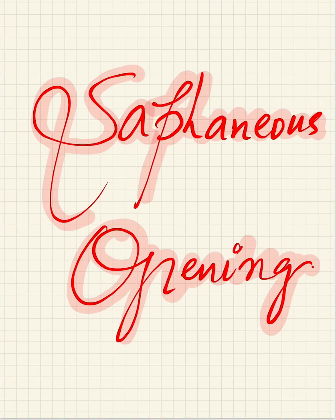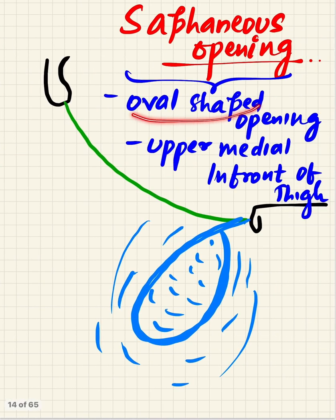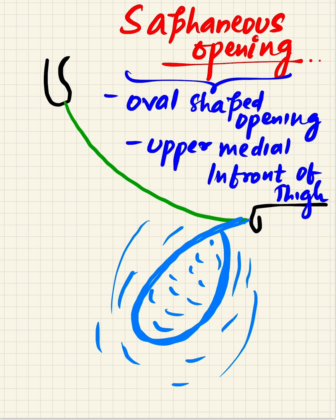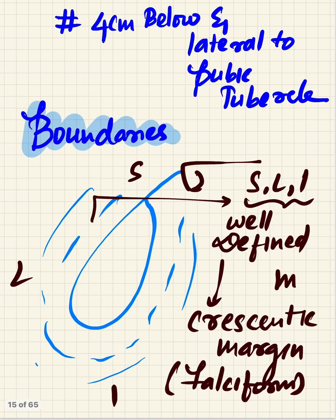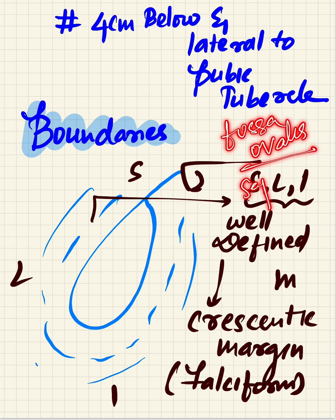Let us see another modification of the deep fascia of the thigh, namely the saphenous opening. The saphenous opening is an oval-shaped opening present in the upper medial front of the thigh. It is also called fossa ovalis or the saphenous hiatus.